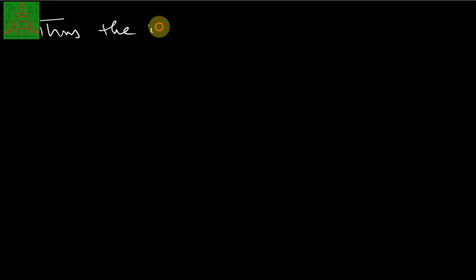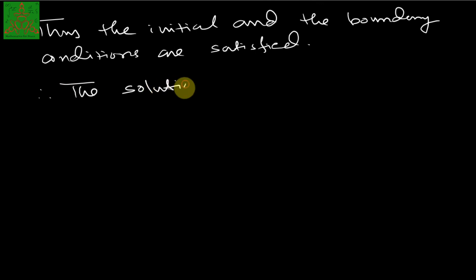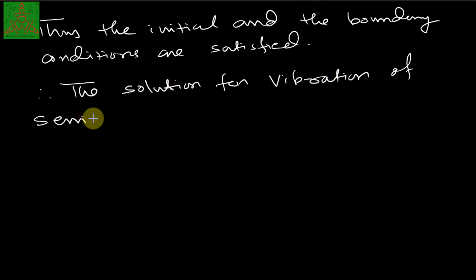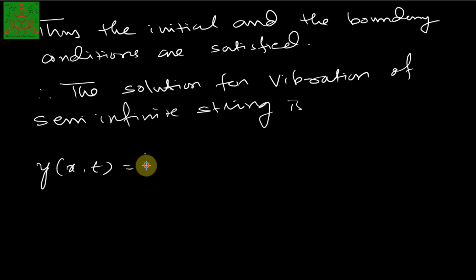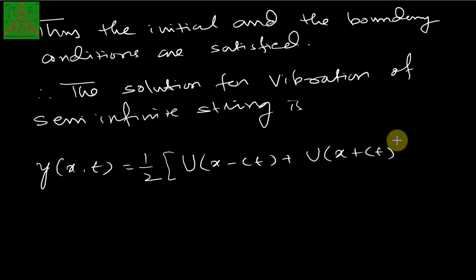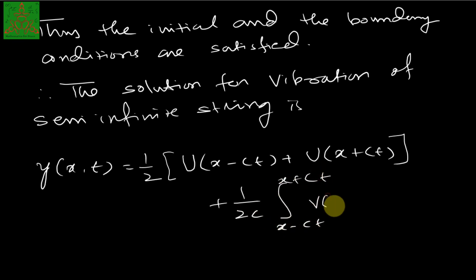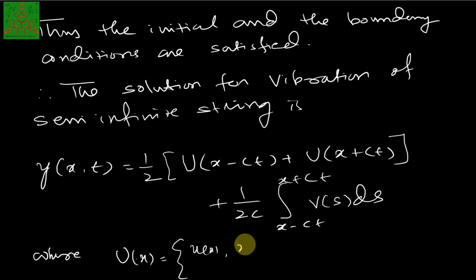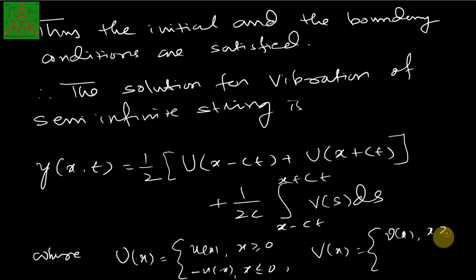Therefore, the solution for vibration of a semi-infinite string is: y of x,t equals one-half times capital U of x minus ct plus capital U of x plus ct, plus 1 over 2c times the integral from x minus ct to x plus ct of capital V of s ds, where capital U of x equals small u of x if x is greater than 0, and minus u of minus x if x is less than or equal to 0; and capital V of x equals small v of x if x is greater than or equal to 0, and minus v of minus x if x is less than or equal to 0.